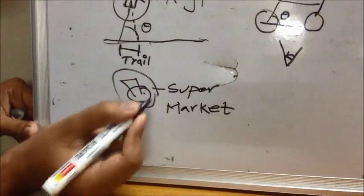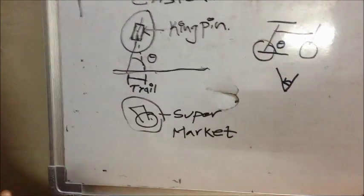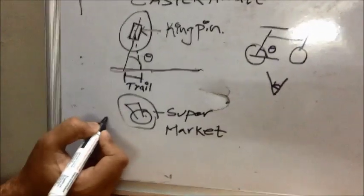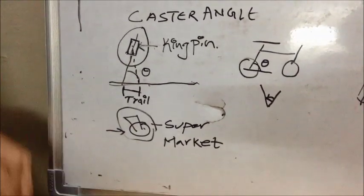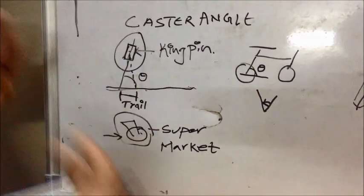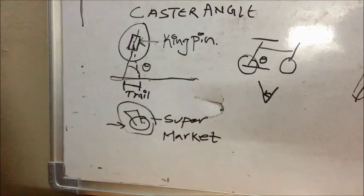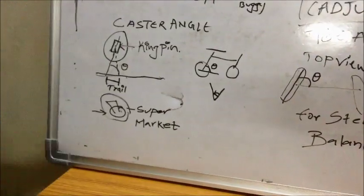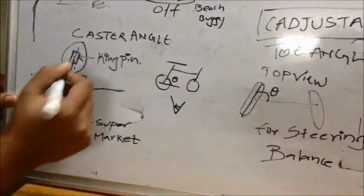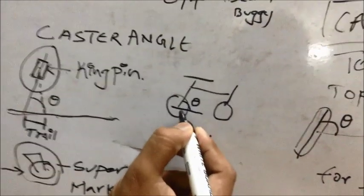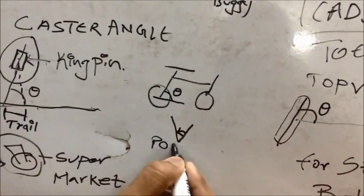That is supermarket. In supermarket, you have observed these kind of tires below the trolley. So these are also positively castored. These tires are going to align by themselves. So this is the case of caster angle. This is generally a positive caster angle.